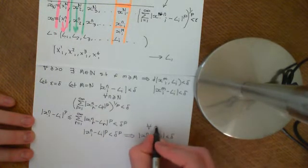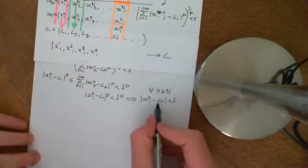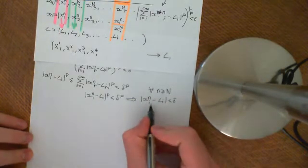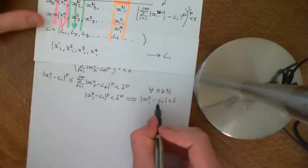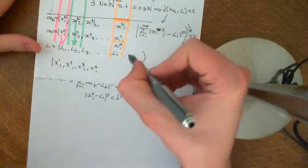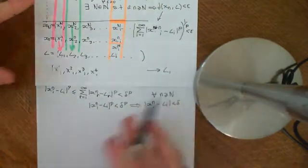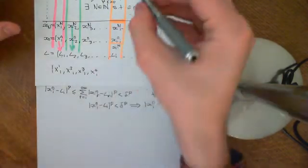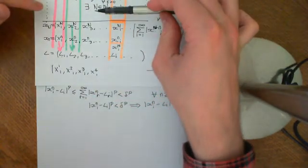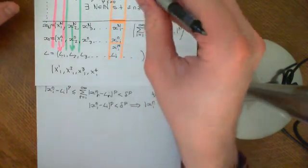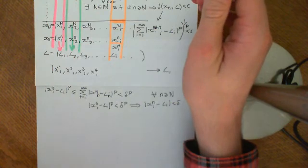And that was true for all little n greater than or equal to big N. So basically, if you converge in LP, it implies that each of your term-wise sequences converge, and they converge to their corresponding term in the limit sequence. In the next video, what we'll see is that the other way round does not hold — i.e., if you've got a sequence of sequences where all of the term-wise limits exist, it does not necessarily imply that that sequence of sequences converges in LP, even if all of the sequences are elements of LP.